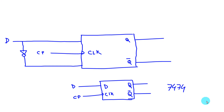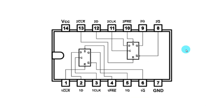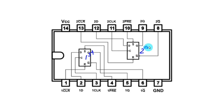Now let's see the pin diagram of IC 7474. This IC has two flip flops — the first flip flop and the second one. Each flip flop has 6 pins. Q and Q bar are the two outputs, and the other four are inputs: set, reset, D, and clock.